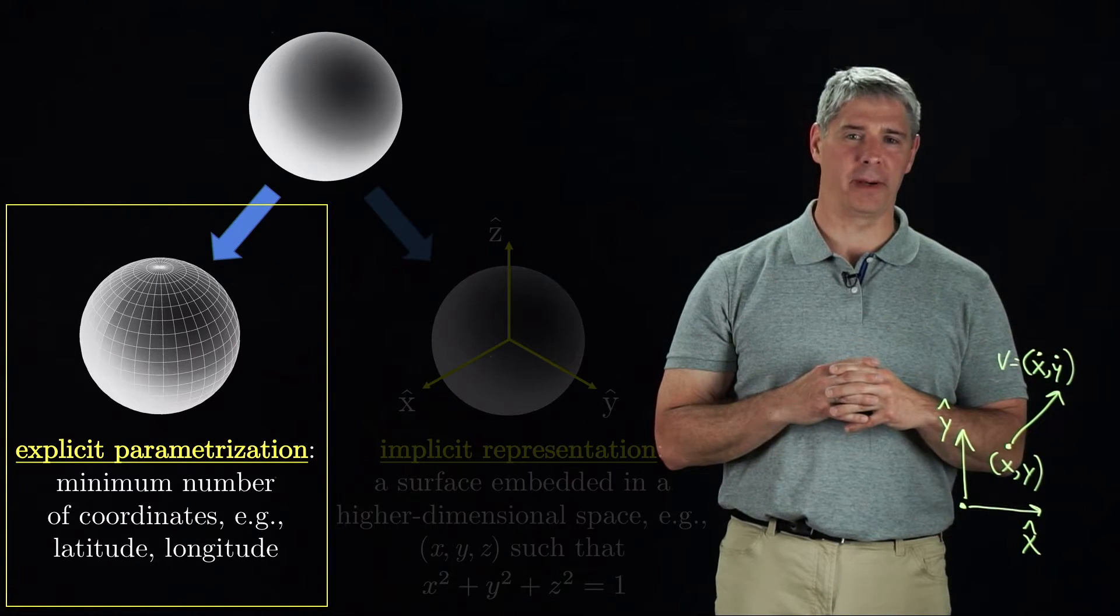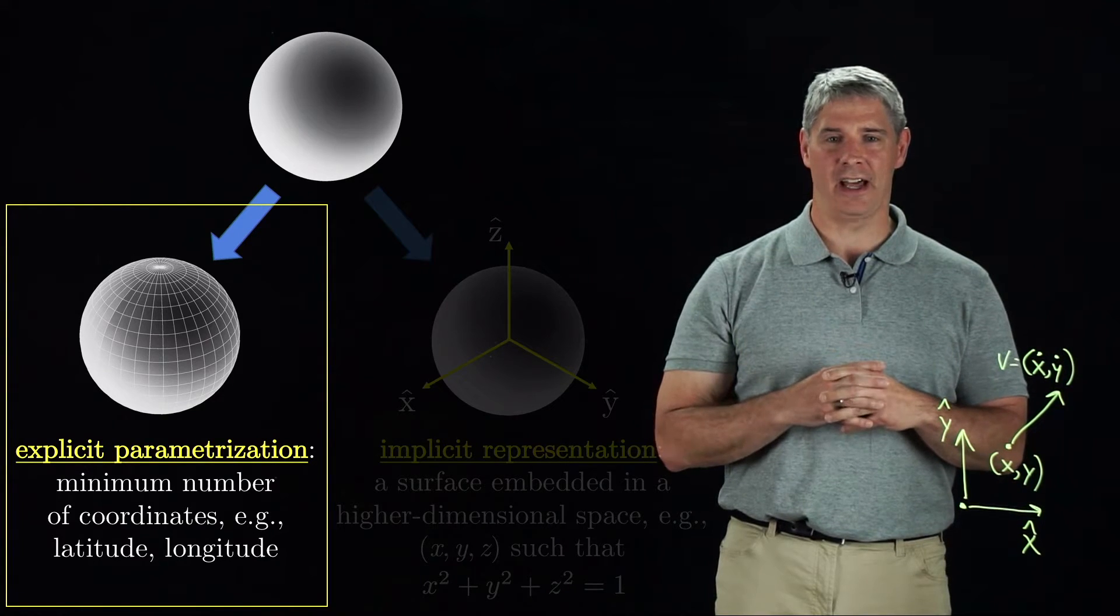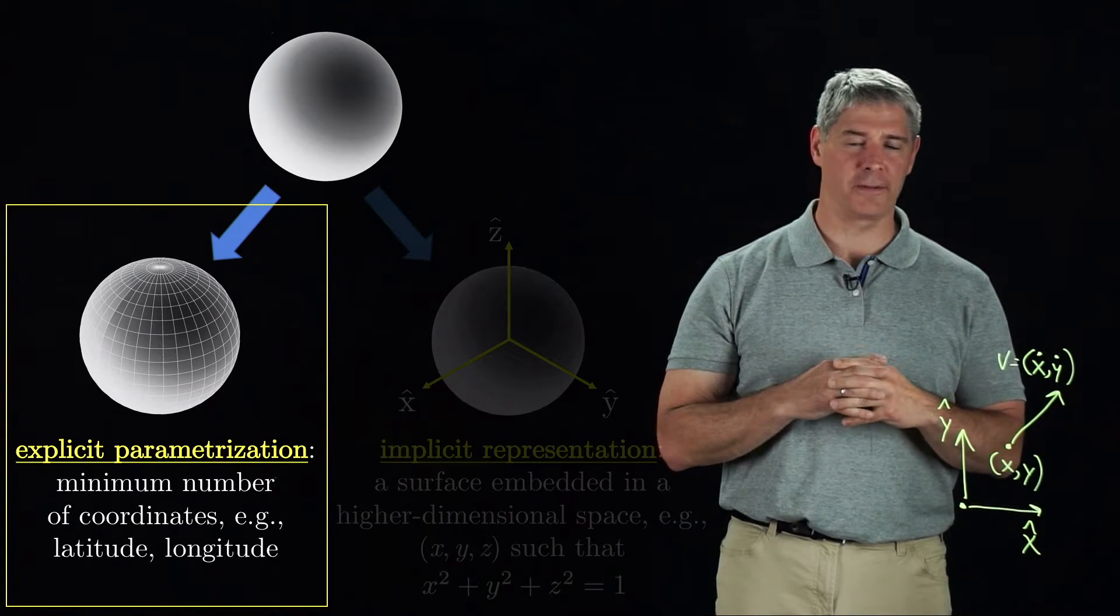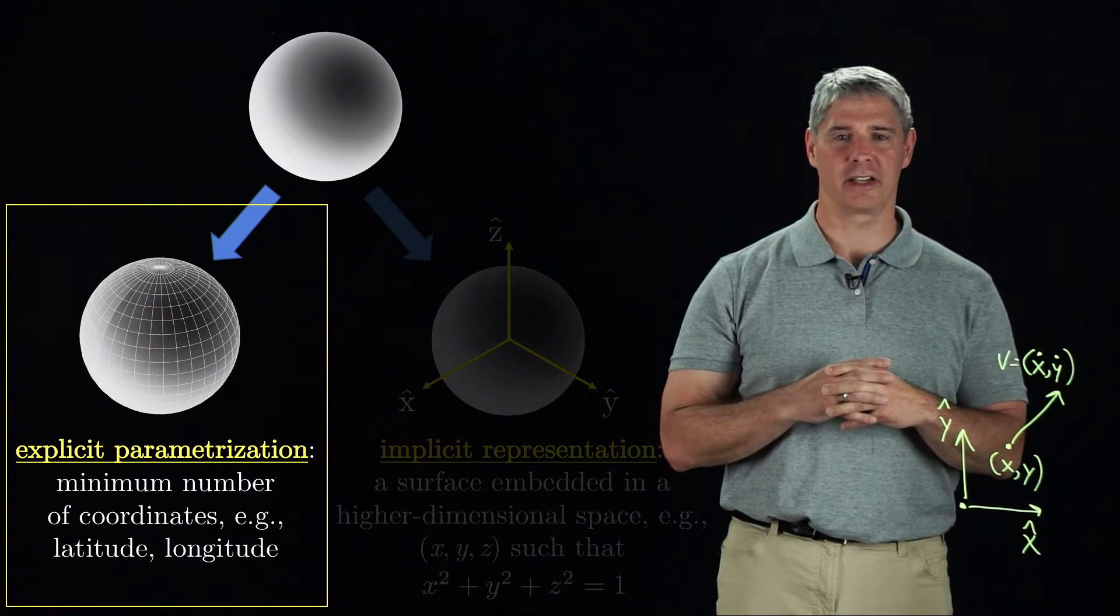An advantage of the explicit parametrization is the simplicity of a minimum number of coordinates. A disadvantage is that, because the topology of the space is different from a Euclidean space, the representation will have poor behavior at some points of the space.